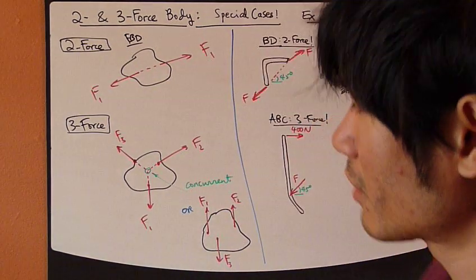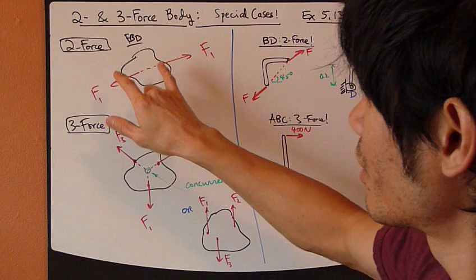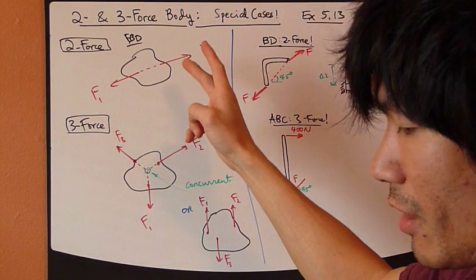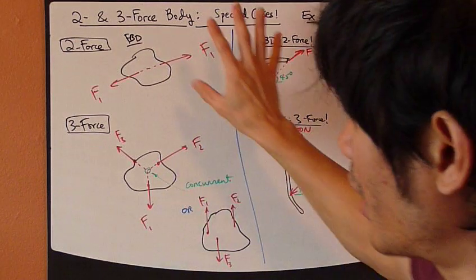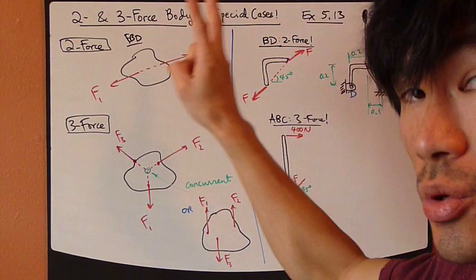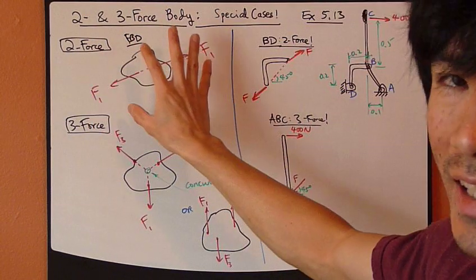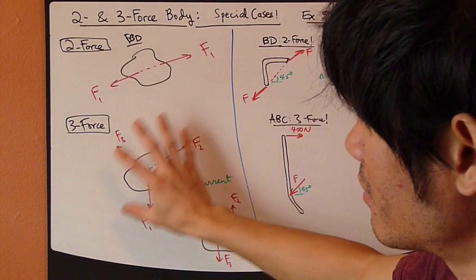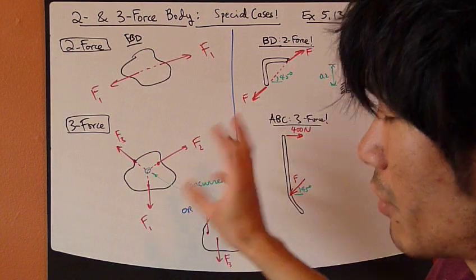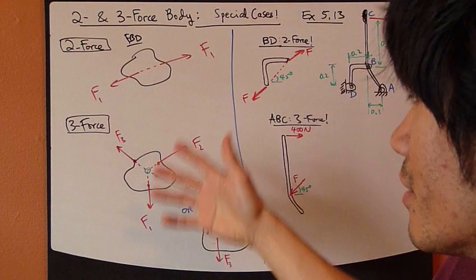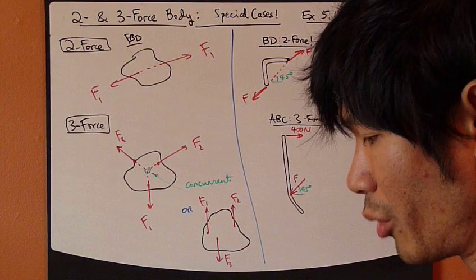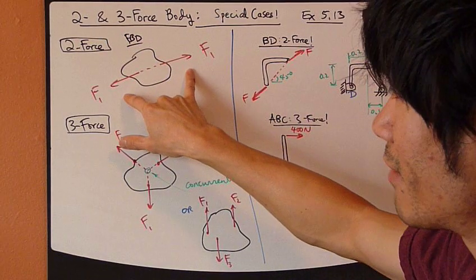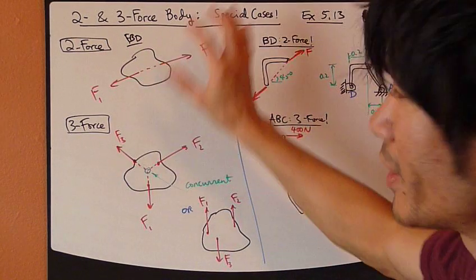Next, I'd like to talk about a couple of special cases. When your rigid body is subjected to only two forces — any kind of forces, reactions and applied forces — total forces, only two, it's called a two-force body in equilibrium. The second special case is when this rigid body is subjected to three forces. According to what we've learned so far, the forces must behave in a certain way in order for the rigid body to be in equilibrium.